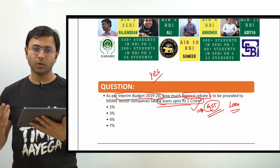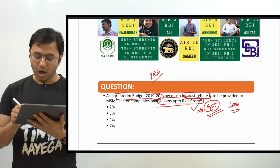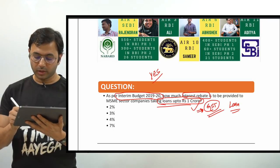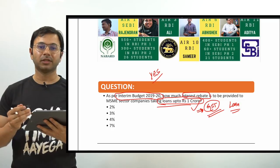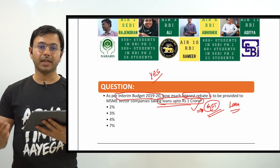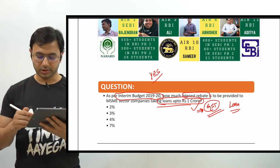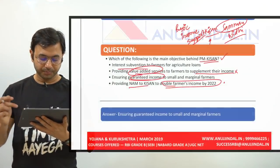Another way this question can be framed is: what is the loan ceiling for MSMEs applying for interest rebate while also being enrolled in the GST structure? The answer to that would be 1 crore. Let's go to the next question.